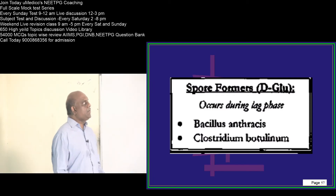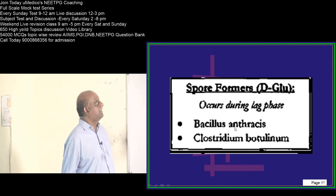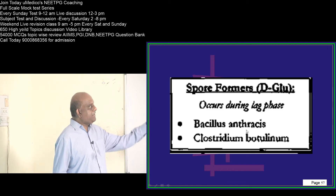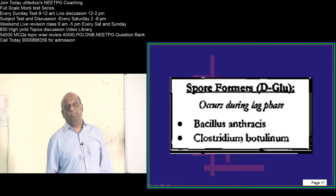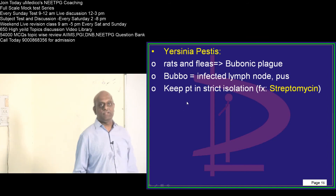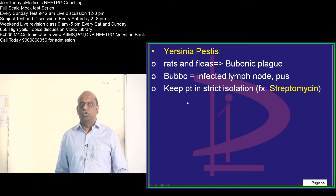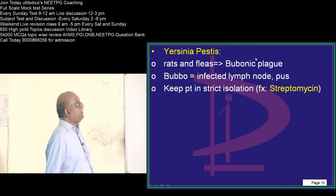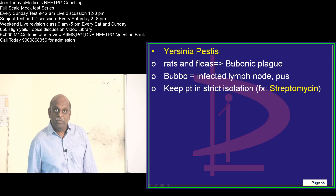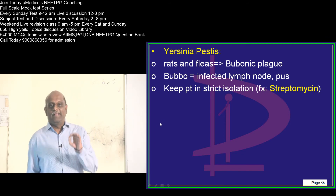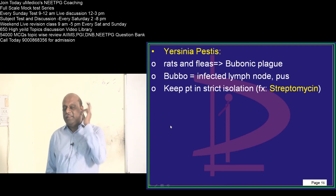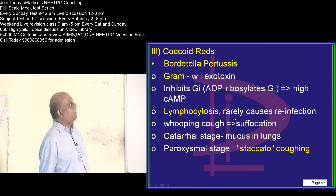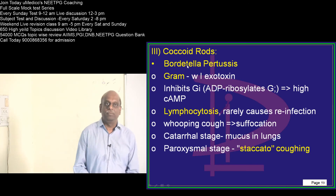What are those organisms which are spore formers? Bacillus anthracis and Clostridium botulinum — you should not forget. Now, Yersinia pestis: rats and fleas, bubonic plague. What is a bubo? It is an infected lymph node. What is the drug of choice for treatment? It is streptomycin.